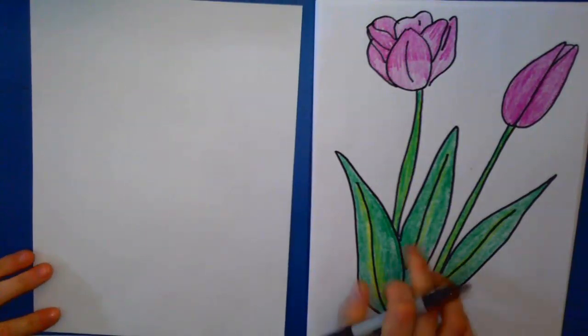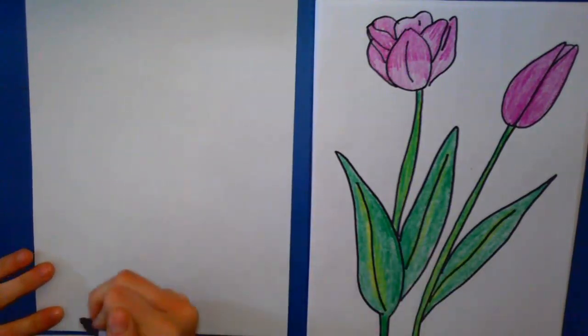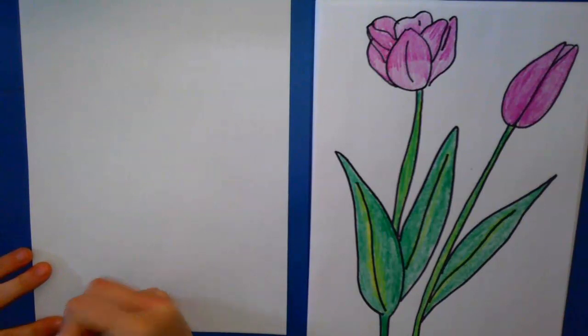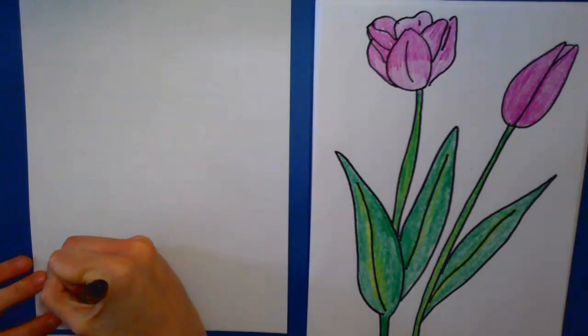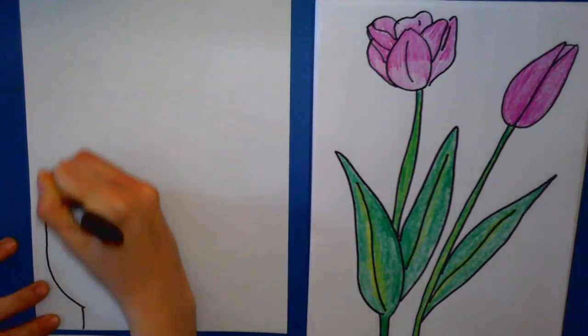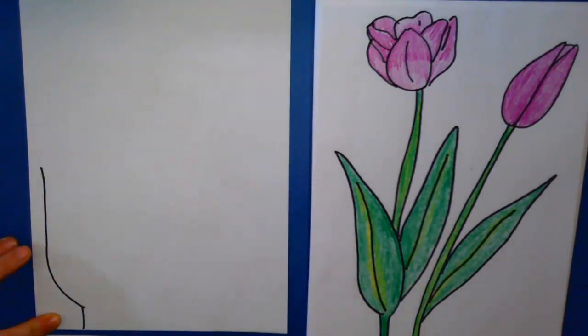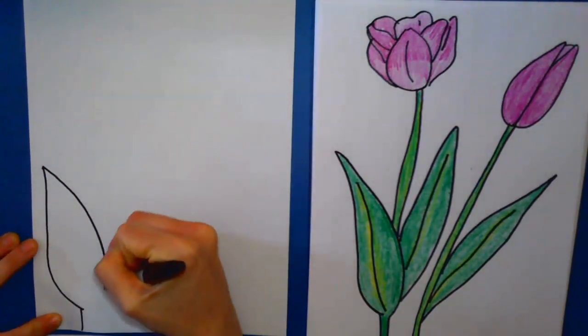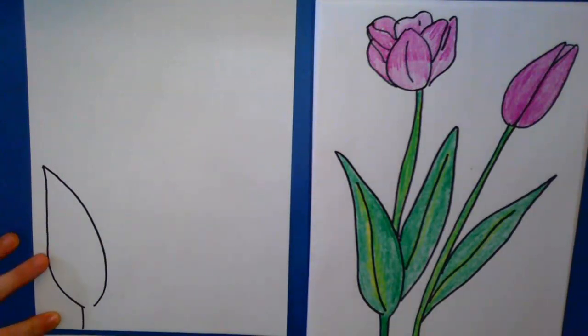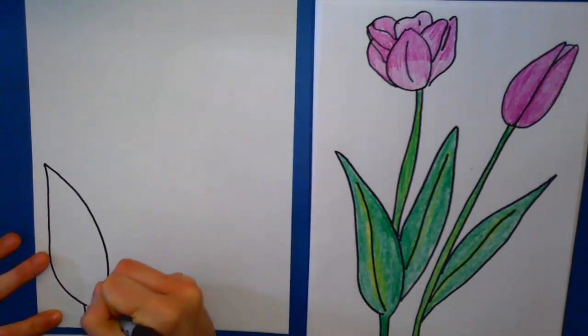Start with this flower on this side first. So what you're gonna do is you're gonna start at the bottom of your paper and just do a line up. Now we're gonna go right into that petal and we're just gonna go up to a point and then back down and around and then bring it down to the bottom of the paper to meet up with the stem.